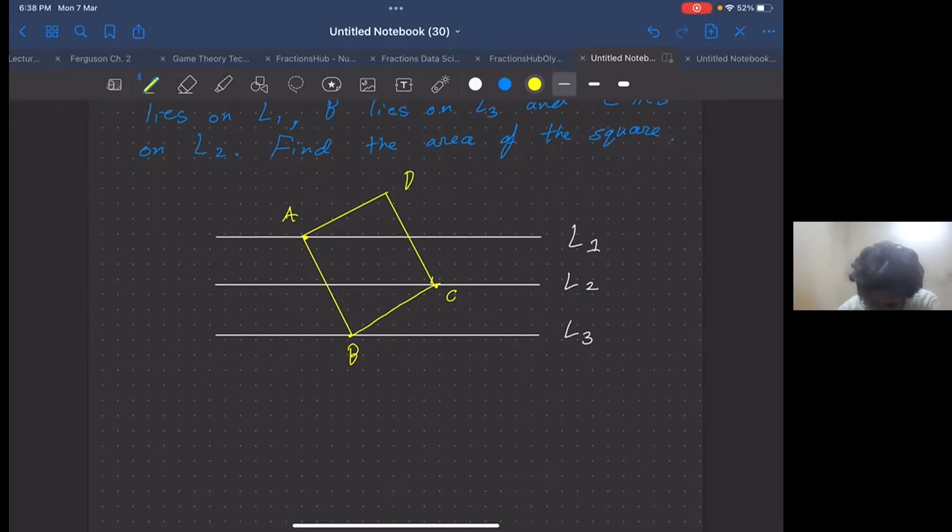We are going to do some constructions. We drop a perpendicular from A to L3, calling this point P, and another one from point C, calling it Q. This is 90 degrees, this is 90 degrees, and so is this one. Say this angle is theta.